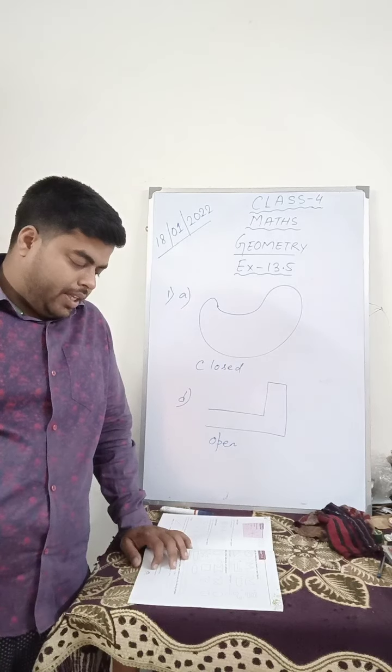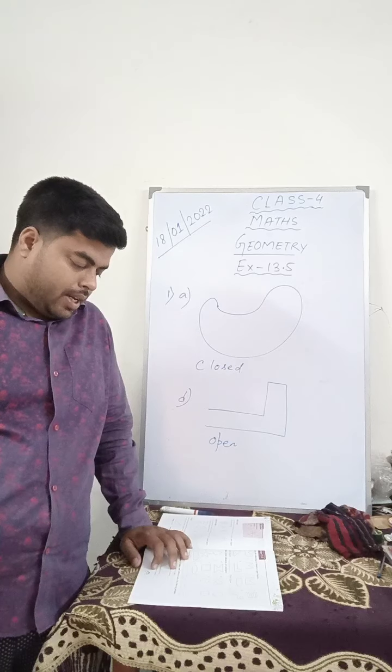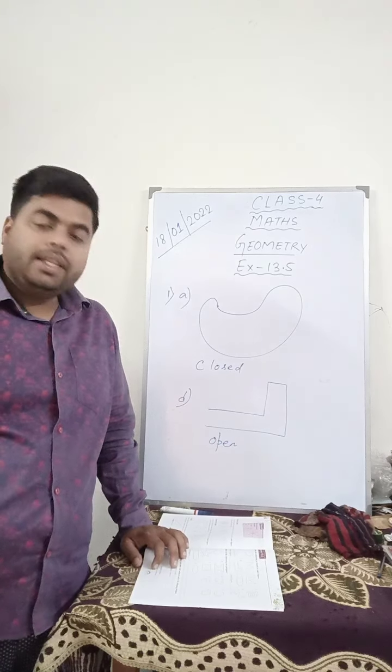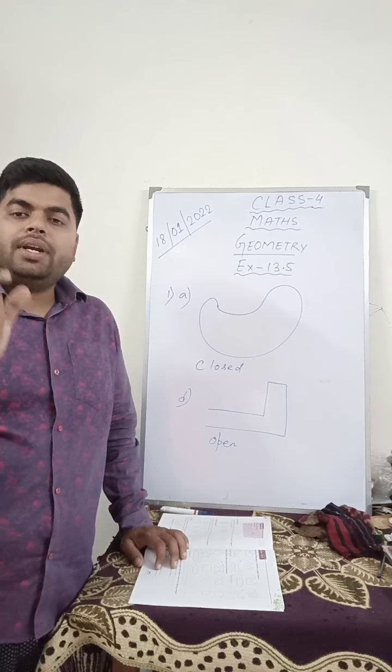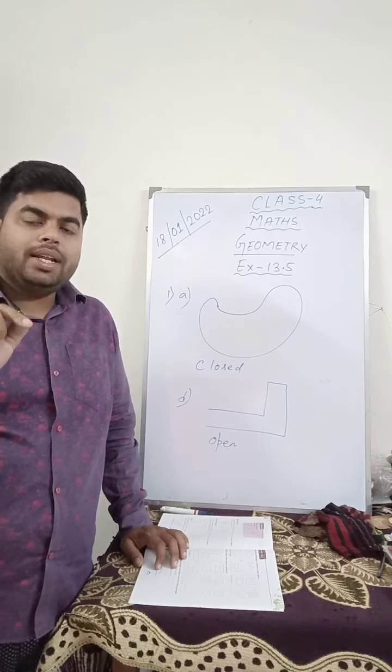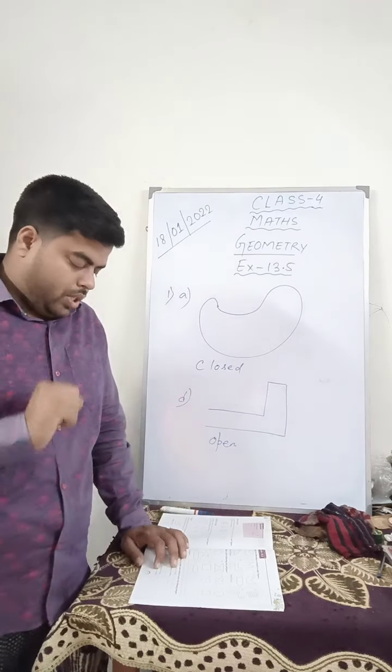but G, H, I, J, they are not polygon. Why? Because the measurement has to be fixed. It has to be fixed line segment. So they are not.